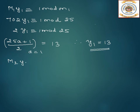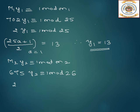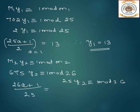Next we find y2. M2·y2 ≡ 1 mod m2. Capital M2 is 675, and y2 ≡ 1 mod 26. First we reduce: 675 mod 26 gives 25. So 25·y2 ≡ 1 mod 26. Writing (26a + 1) / 25 and substituting values of a from 1, 2, 3 and so on — we have to go until a equals 24 to get a whole number. So y2 equals 25.